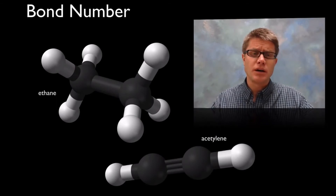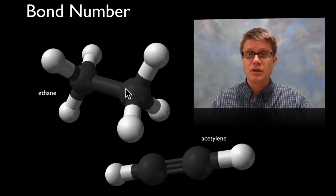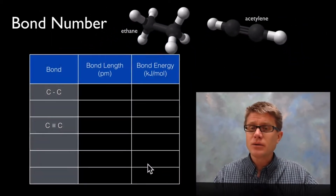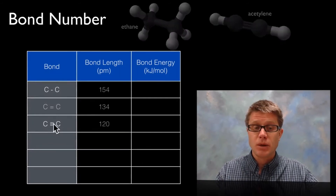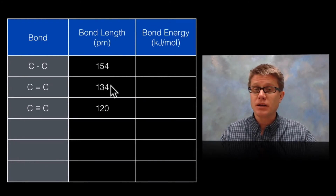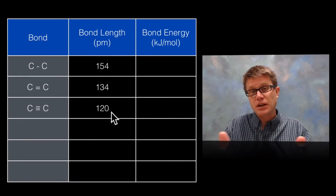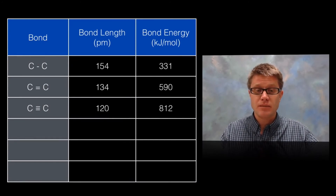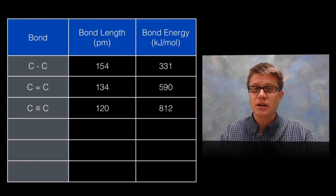What happens as we increase the bond order? Let's say we're looking at two molecules that look essentially the same: ethane, which is carbon attached to carbon with hydrogens around the outside, and acetylene, which is also carbon attached to carbon with hydrogen around the outside, but with a triple bond. If we measure their bond lengths, we find that as we increase the number of bonds, we're actually decreasing the bond length — the atoms are getting closer and closer together. And what does that tell us about bond energy? The bond energy is increasing. The more electrons we're sharing, the more charges there are, the greater the bond energy, and therefore the shorter the bond length.